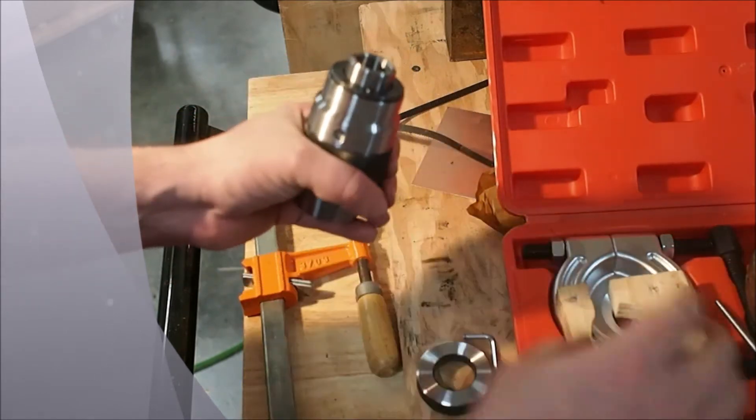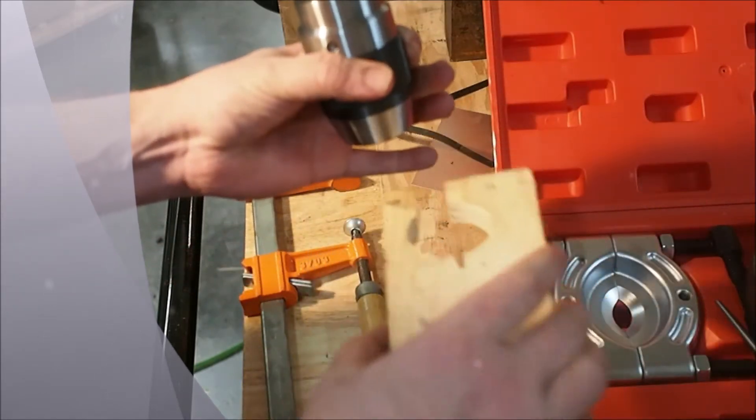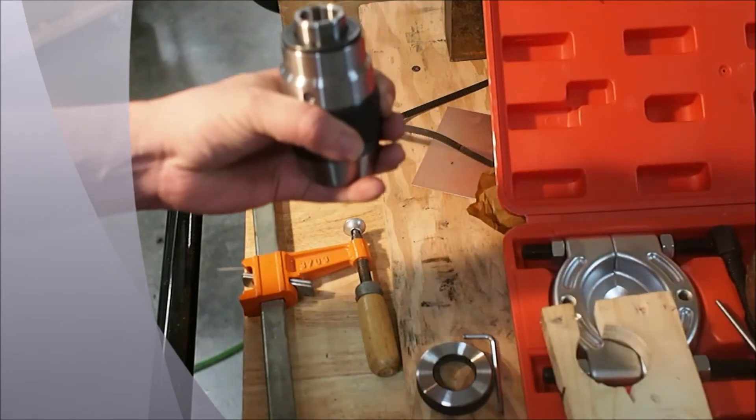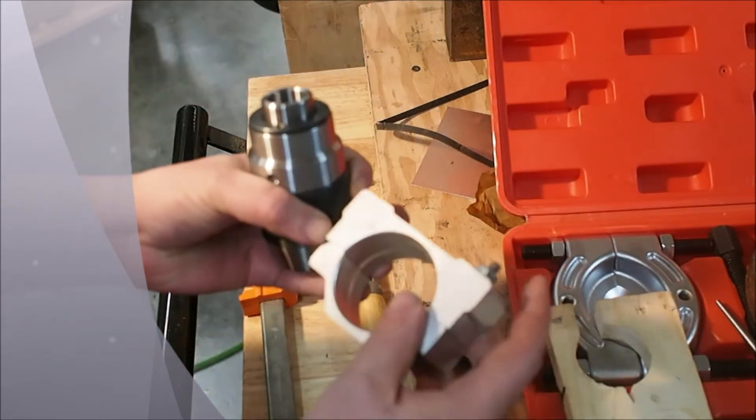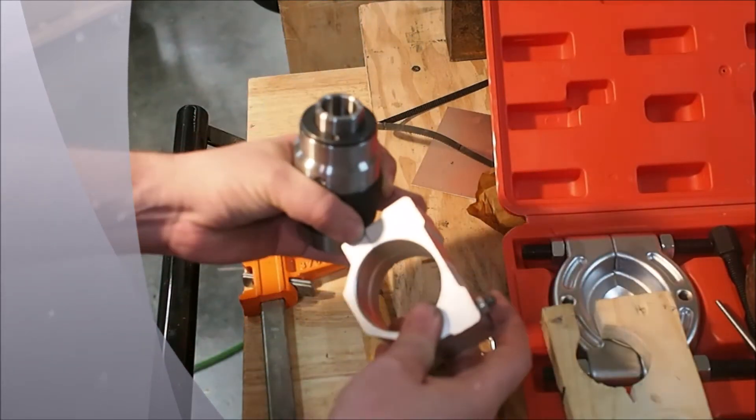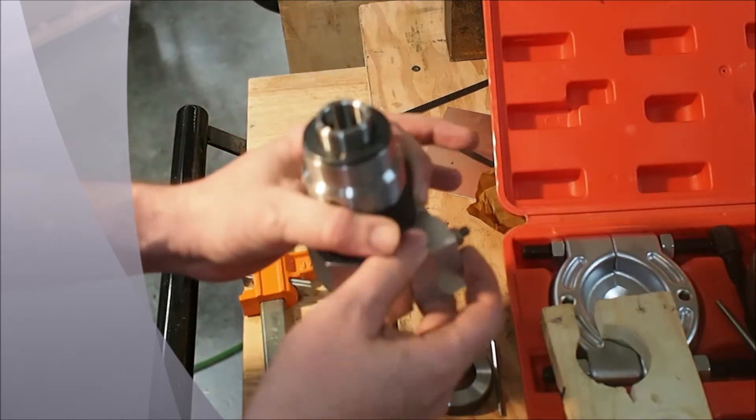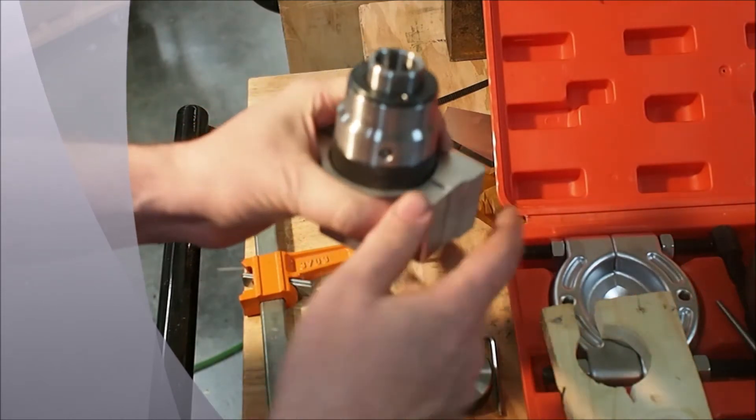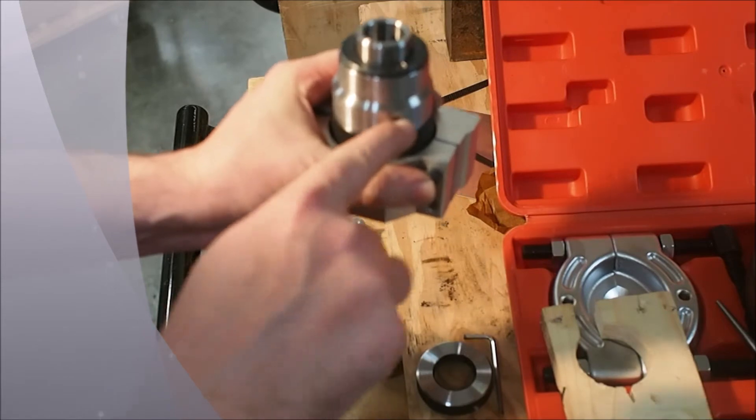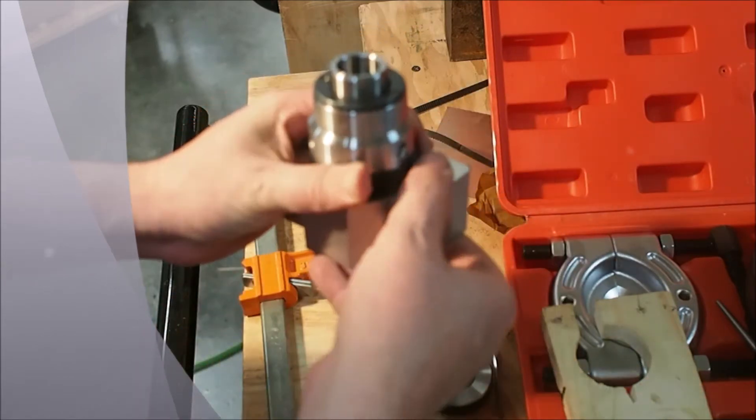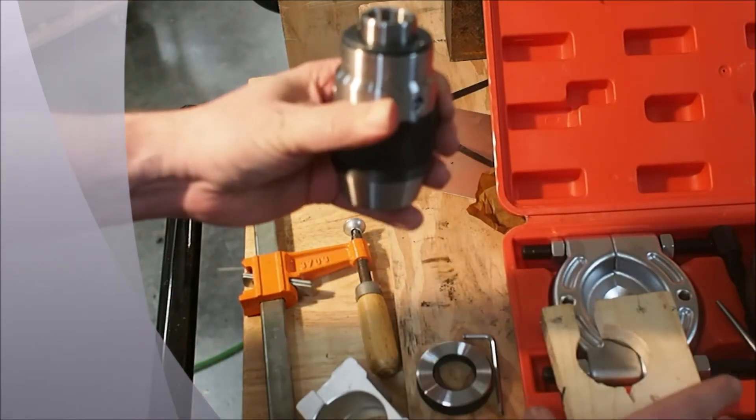Then the next thing I did is I actually took this old spindle mount here for a CNC spindle and put it on the knurled side here.